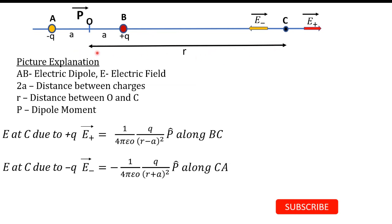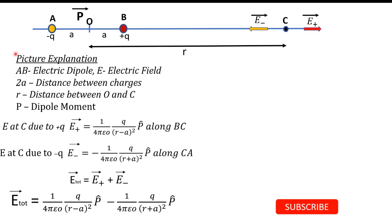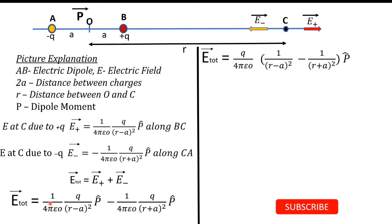By the superposition principle of electric fields, the total electric field E-total equals E-plus plus E-minus. Substituting the values, E-total = 1/(4πε₀) × q/(r−a)² × p-hat − 1/(4πε₀) × q/(r+a)² × p-hat. Taking q/(4πε₀) as common, we get q/(4πε₀) × [1/(r−a)² − 1/(r+a)²] × p-hat.